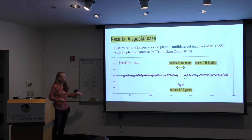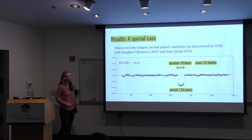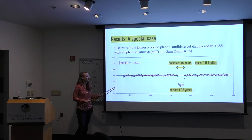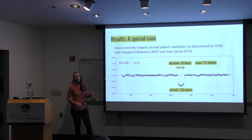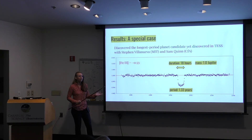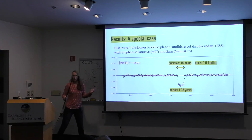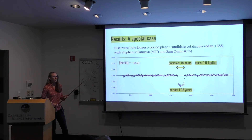Totally by serendipity, we found a really great case of a single transit — it's the longest-period planet candidate discovered in TESS yet. Working with Steven Villanueva and Sam Quinn, according to their models this is a Jupiter-mass planet with a period of 1.33 years, orbiting between the orbits of Earth and Mars. This could actually be a solar analog system at low metallicity — it could have interior planets, a Saturn, and could closely resemble our solar system. It's a G star around 5,500 to 6,000 K, not an M dwarf.